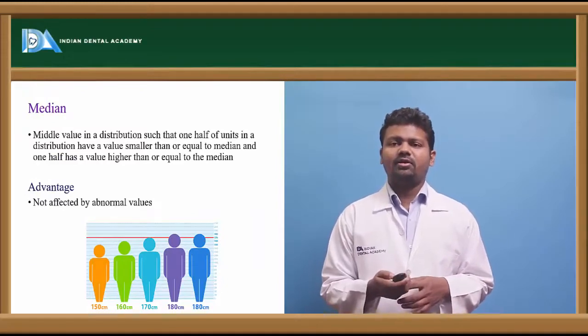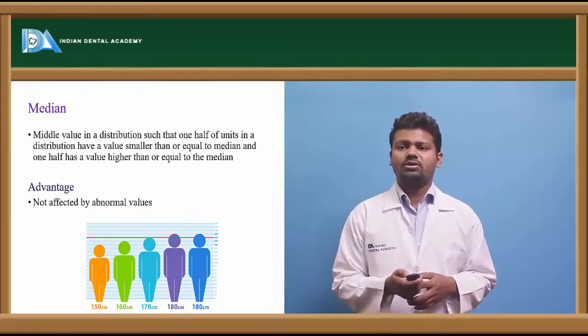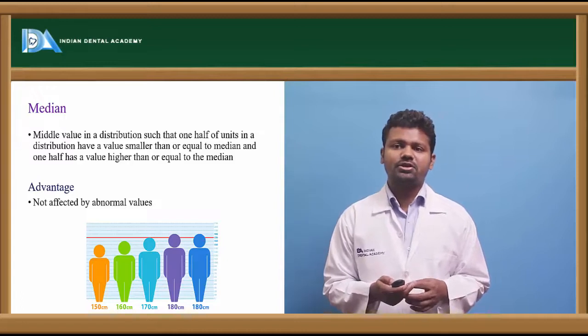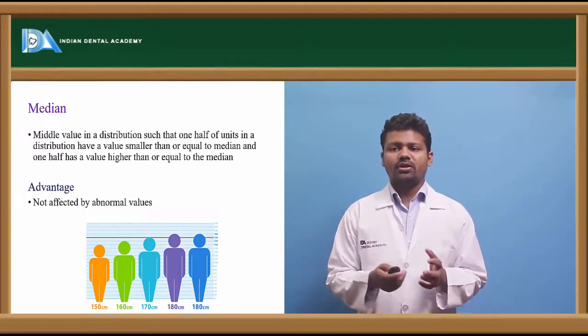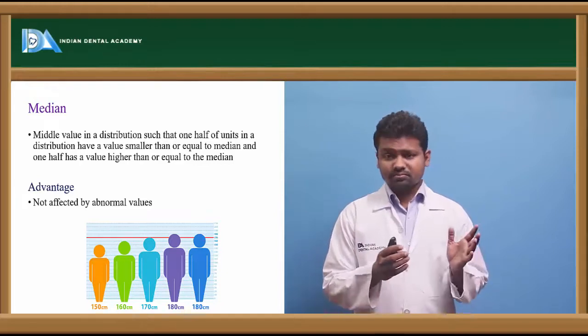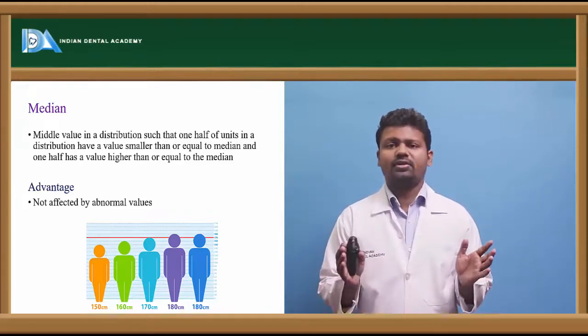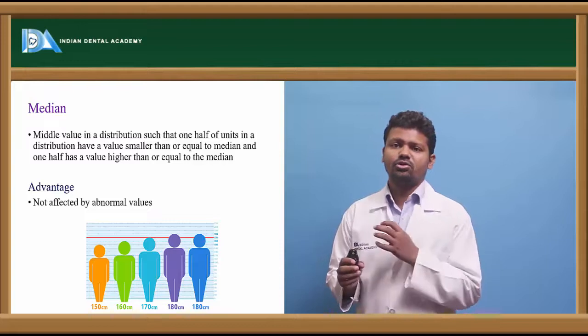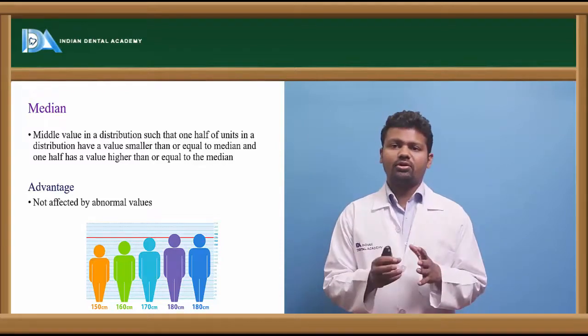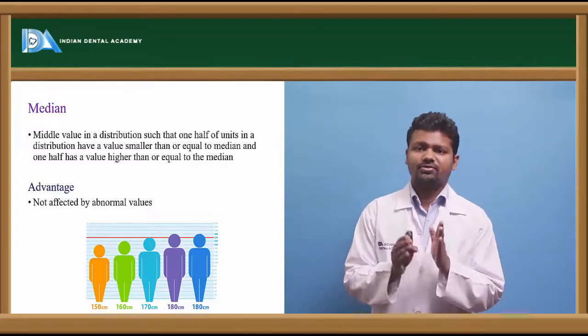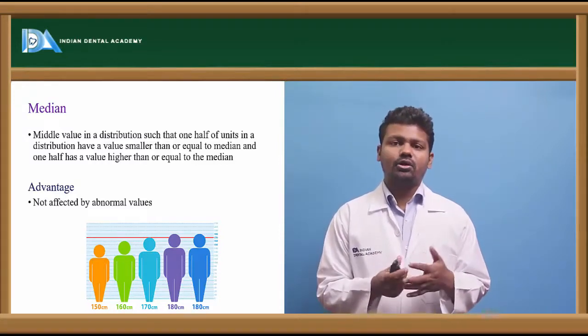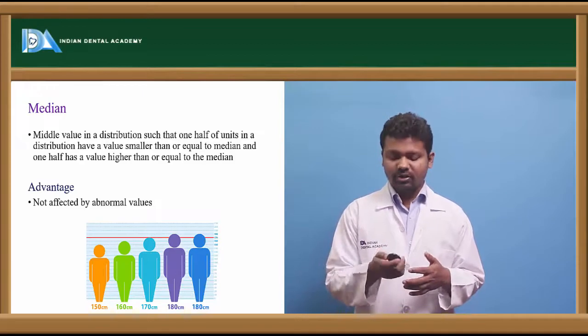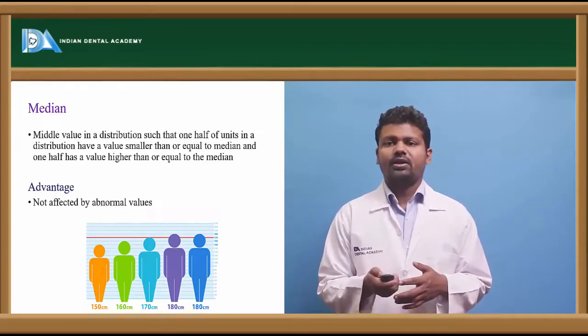The median is the middle value in distribution, such that half the units are smaller and half are larger. For example, if you have 1 to 10 cases of dental caries from different age groups, select the middle values, the 5th and 6th. Add them and divide by 2 to get the median.